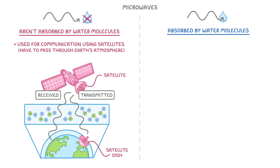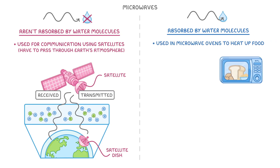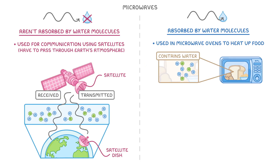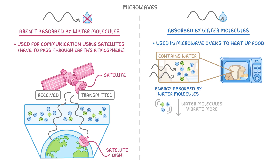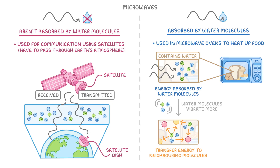The second type of microwaves are used in microwave ovens, where they help us to heat up our food. Because most of the food that we eat contains lots of water molecules, when microwaves are fired at our food, the energy from those waves gets absorbed by all the water molecules. As the water molecules start to vibrate more with all that new energy, they transfer some of the energy to neighbouring molecules, so that it spreads throughout the food by conduction or convection.